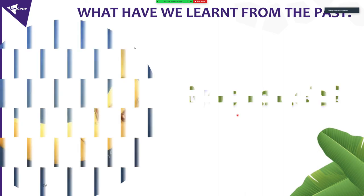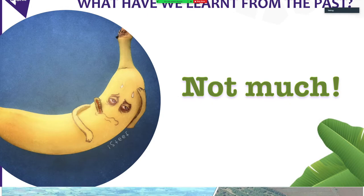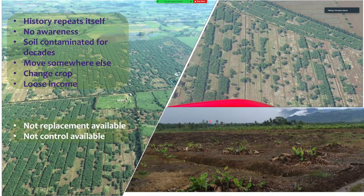So what have we learned from the previous Race 1 epidemic? Really not too much, because the story is repeating now. There is no awareness in many countries. The soils are contaminated. People are moving, changing crops, losing income. And there is no replacement for Cavendish this time — or at least we haven't found it yet.